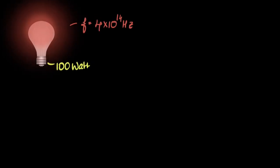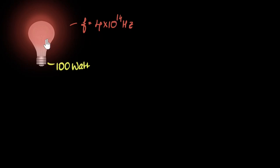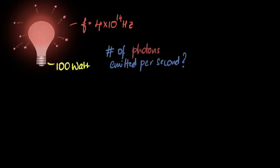Let's solve some numericals on quantum nature of light and photons. Here's the first one. We have a 100 watt light bulb that's giving out light of frequency four times 10 to the 14 hertz. Now according to the quantum nature, the bulb is releasing photons — it's emitting photons. The question is: how many photons are being emitted per second by this light bulb?